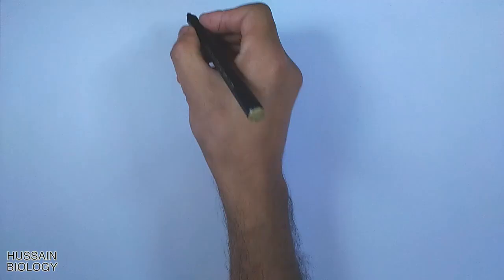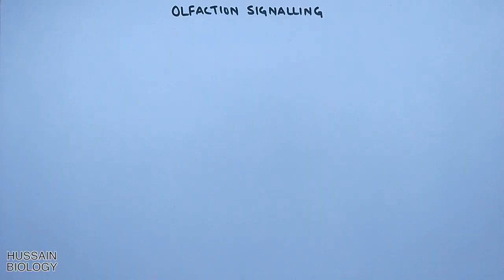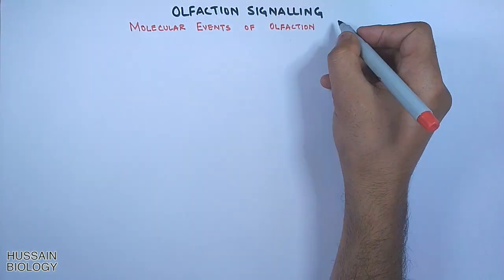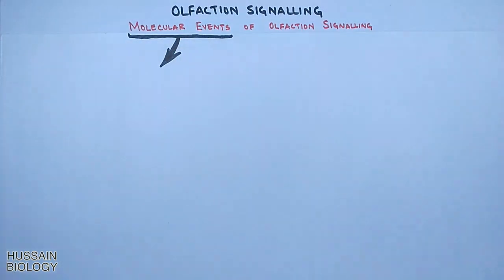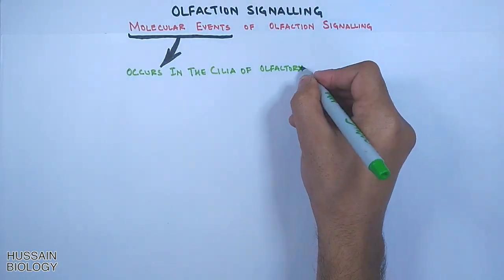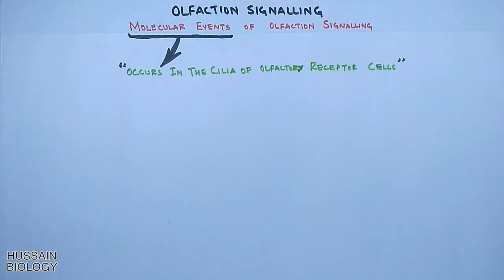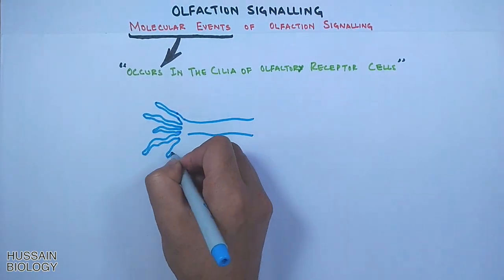In this video we will discuss the olfaction signaling, specifically the molecular events of olfaction signaling. These molecular events occur in the cilia of olfactory receptor cells. Here in this diagram we can see the structure of the olfactory receptor cell.